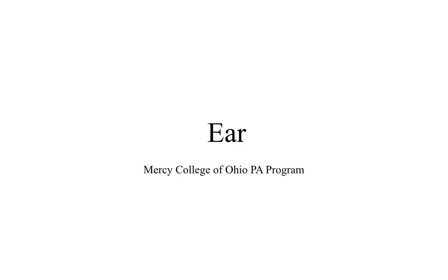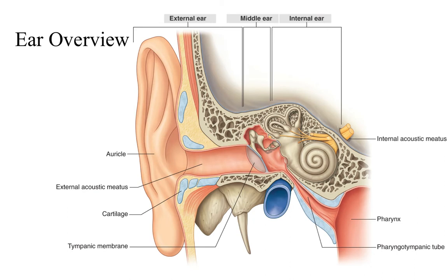Hello students, it's Dr. Ways and welcome to your lecture on the ear. The ear is made up of three parts: the external ear, which is the part we can visibly see; the middle ear, which is just outside the skull; and the internal or inner ear, which is inside the bones of the skull and contains the structures required for processing sound and equilibrium.